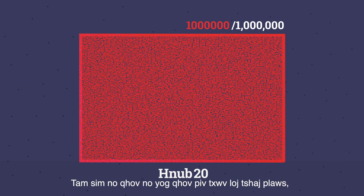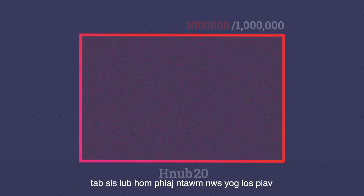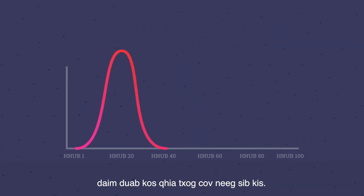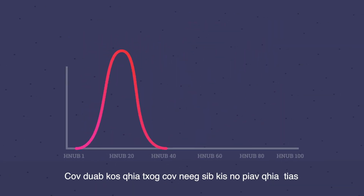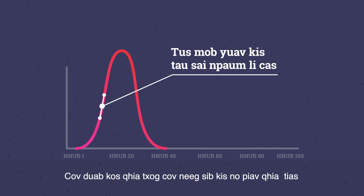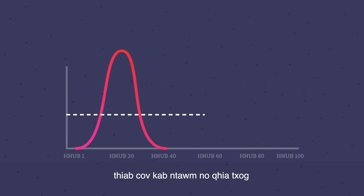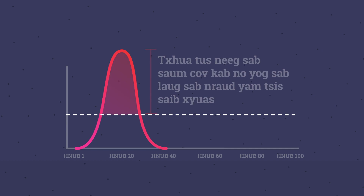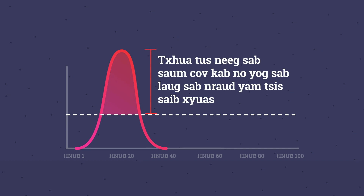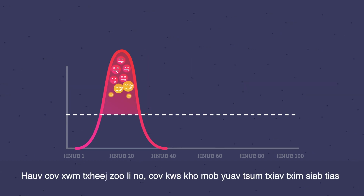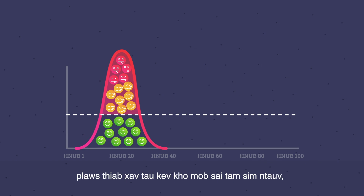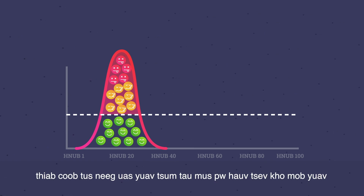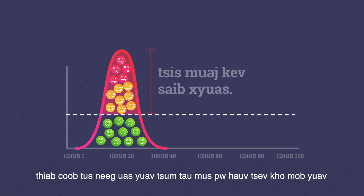Now this is an extreme example, but the purpose of it is to explain this curve. These curves represent how quickly the disease is spread, and this line here represents how much our healthcare system can assist. Everyone above this line is left outside without care. In situations like this, doctors have to determine who is the most critical and needs immediate treatment, and many people who need to be hospitalized will be left without care.